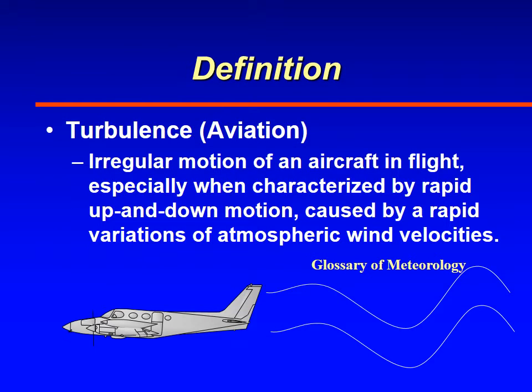By definition, turbulence, according to the glossary of meteorology as it pertains to aviation, is an irregular motion of the aircraft in flight. In other words, the airplane is bouncing up and down, and so are the passengers and everything else in the aircraft.